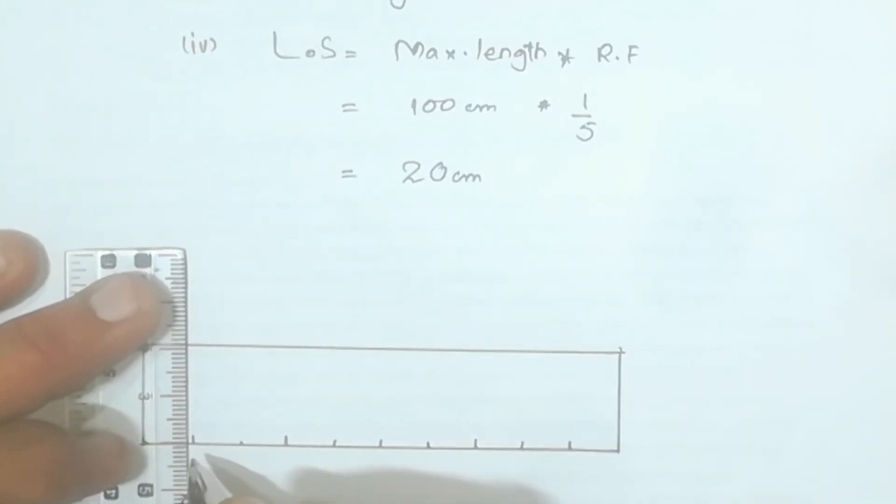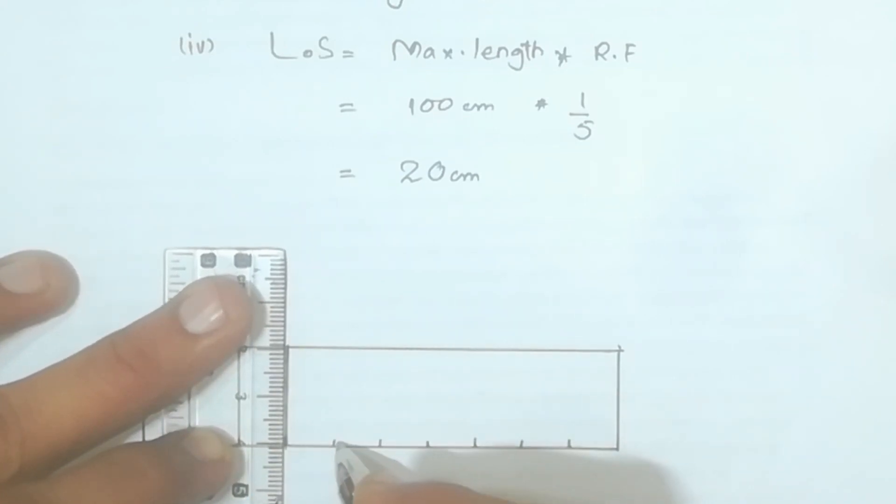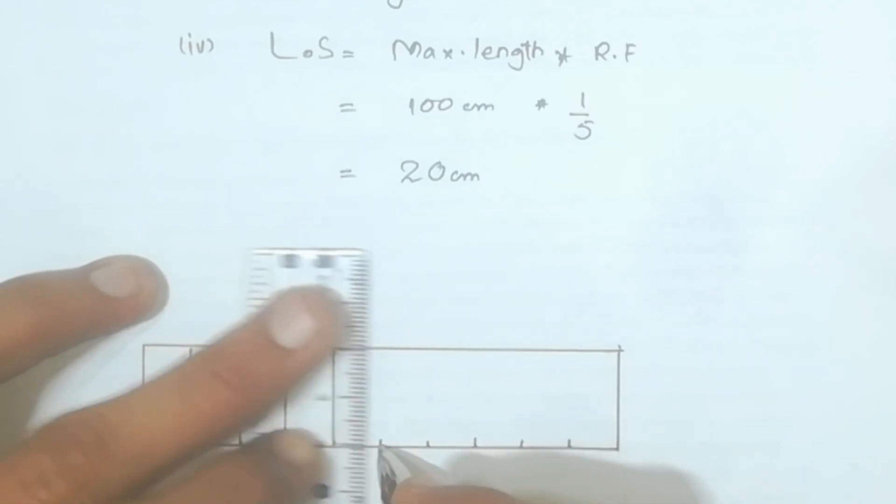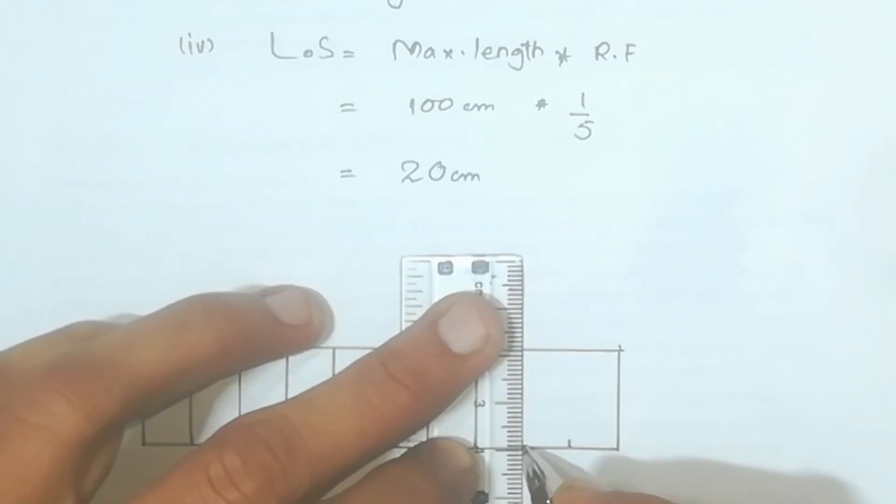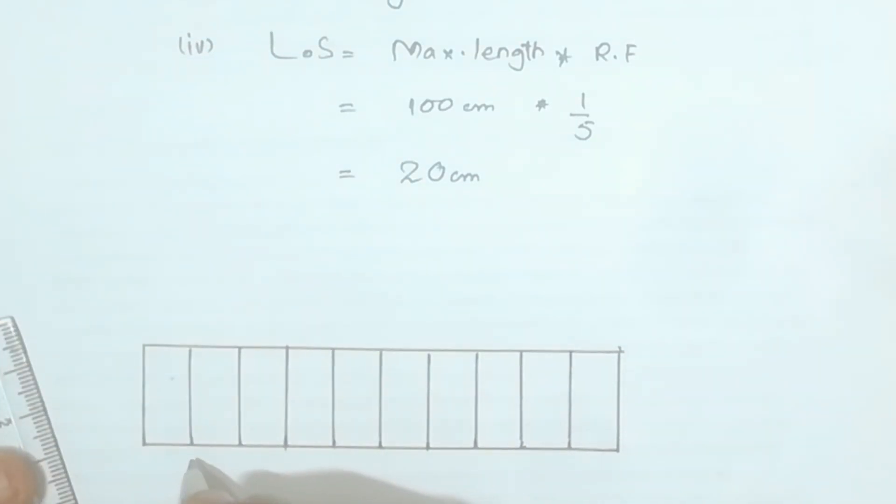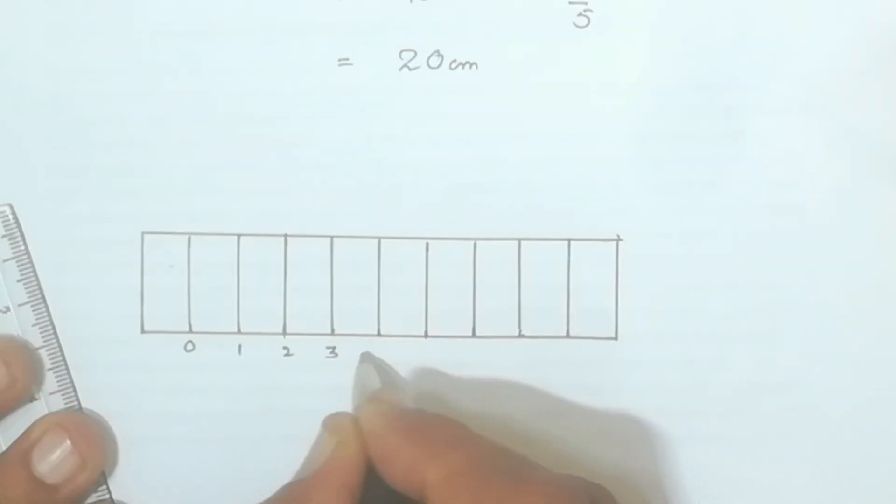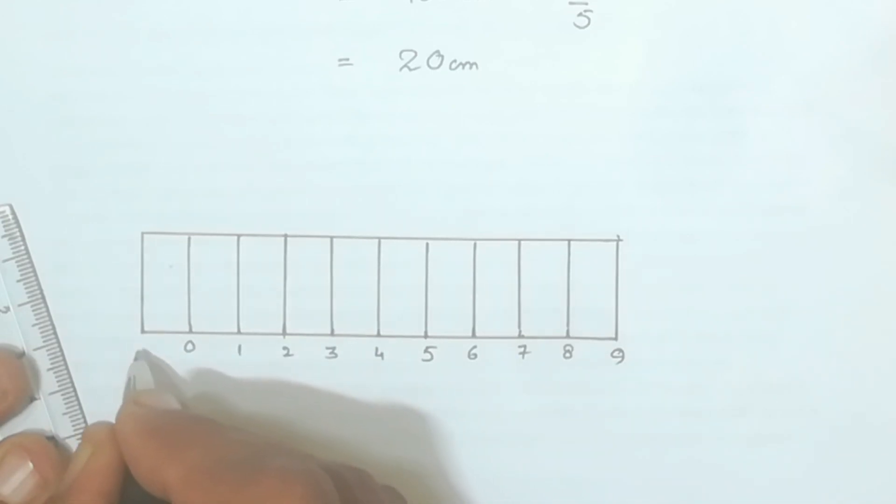Now you can see it, here I will find it. Continuing the same process, so here it will come 0, 1, 2, 3, 4, 5, 6, 7, 8, 9. This is 9 decimeters and here it will come 10 decimeters. That means 2, 4, 6, 8, 10 decimeters.